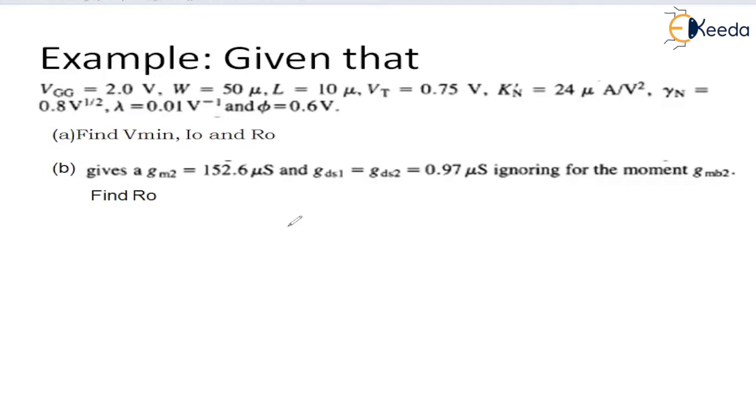So Vmin can be found as VGG minus VT. We have already seen in the previous lecture how this VGG minus VT is Vmin, and it can be written as 2 minus 0.75, which gives the answer 1.2 volts.